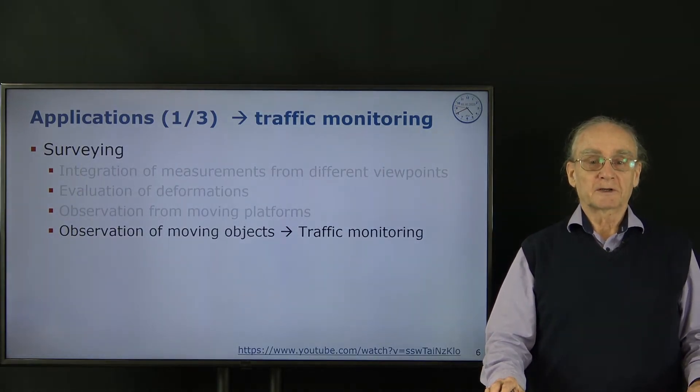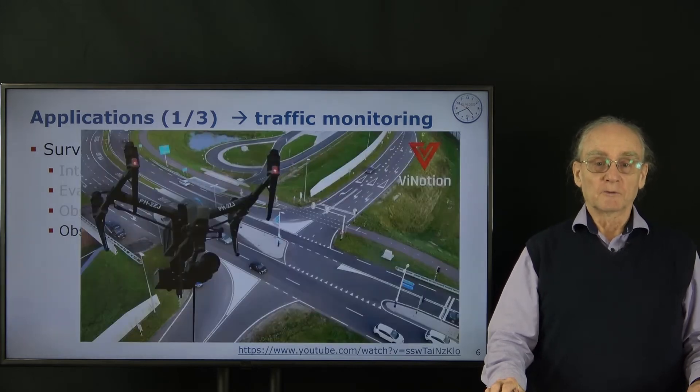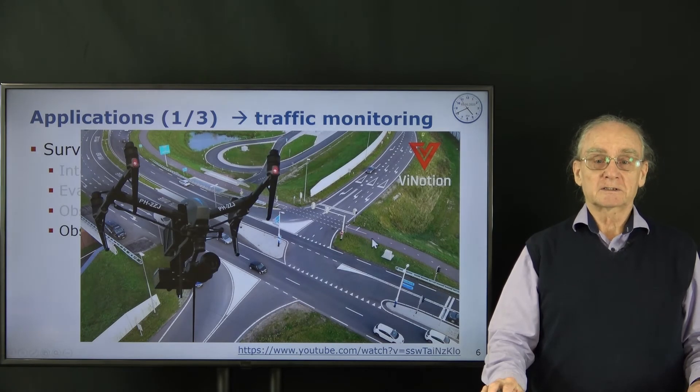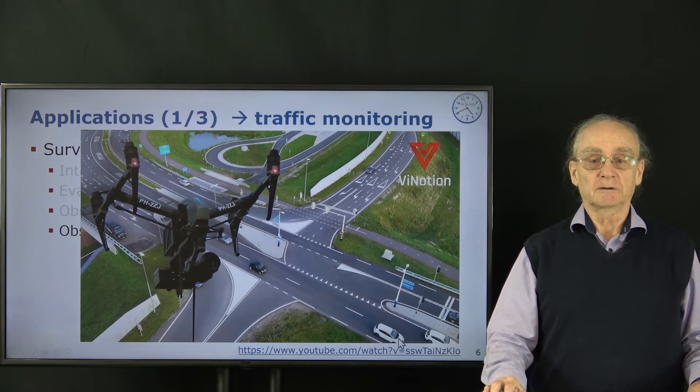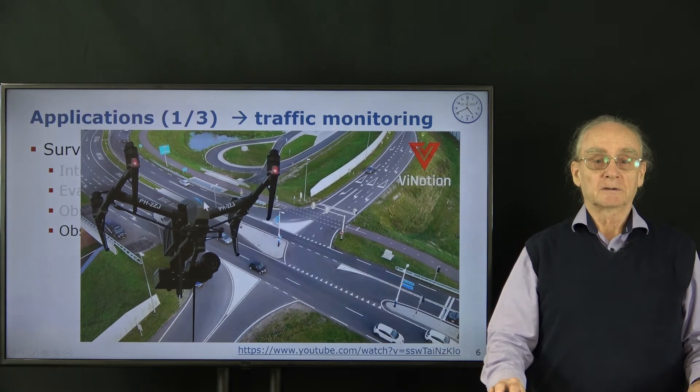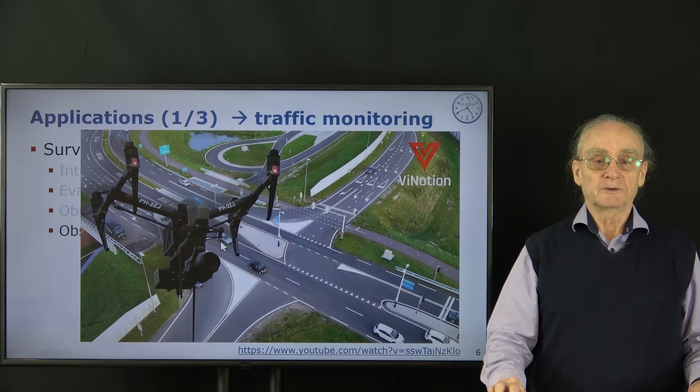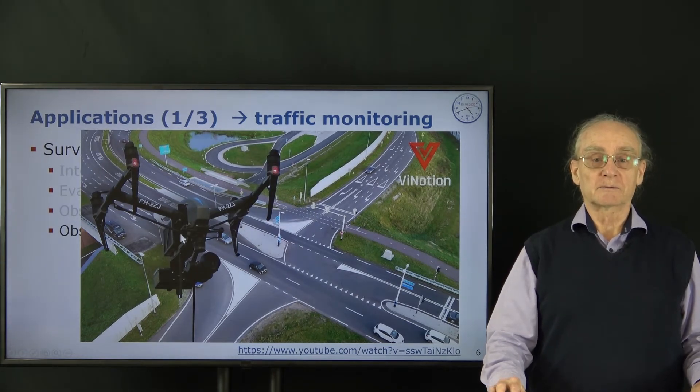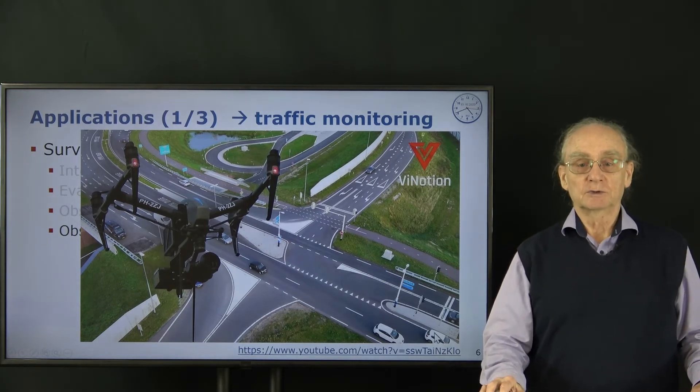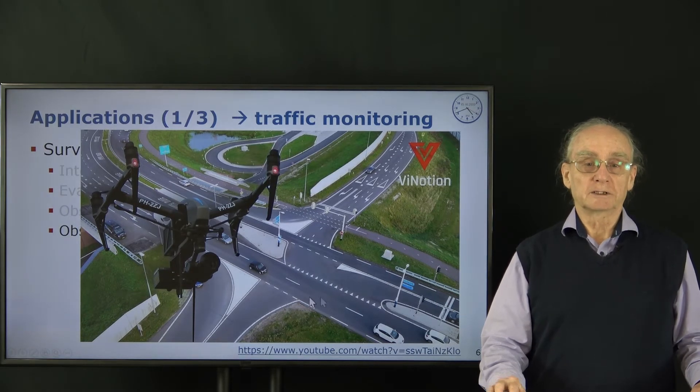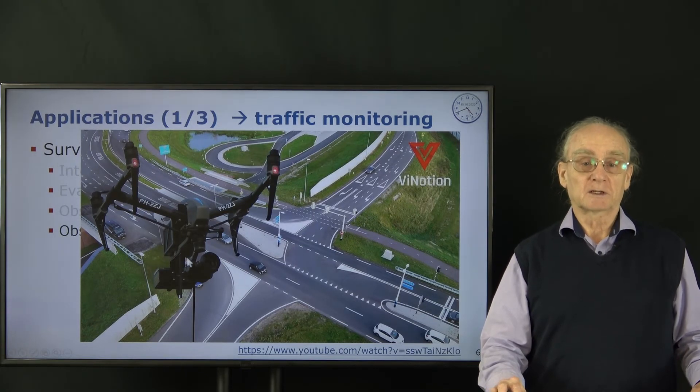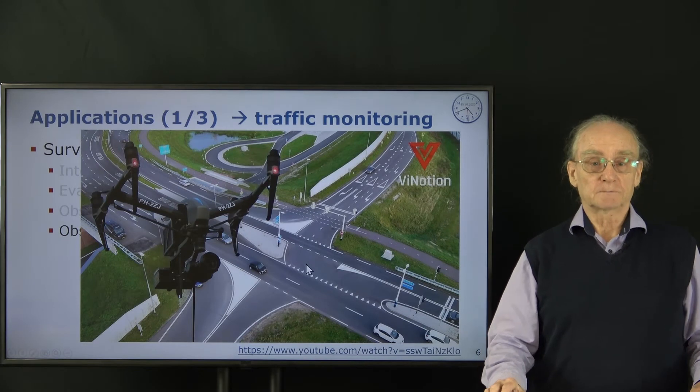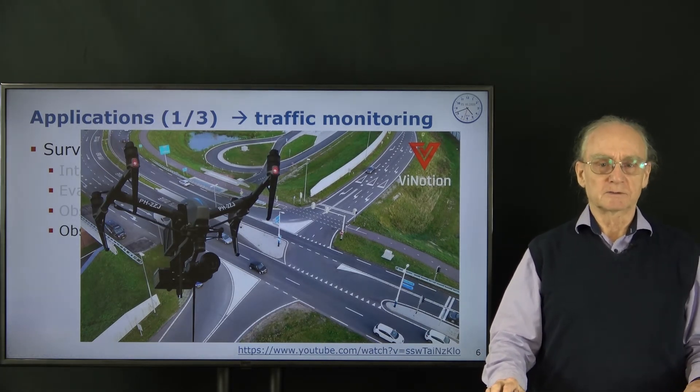We could also have traffic monitoring from a moving platform. Here you have an example where the task is to observe what the cars are doing on the ground. Now we have two types of motions: one is the motion of the sensor, and the other one is the motion of the cars. We want to know the mutual relation, that means the motion of the cars, the motion of the camera, and of course the relative position between the camera and the ground. So we have a lot of coordinate systems in these applications.